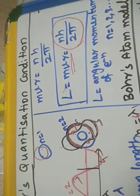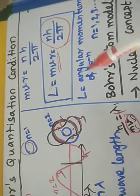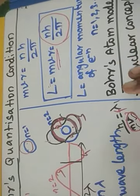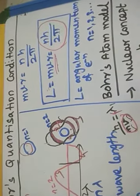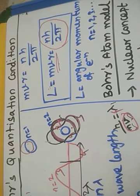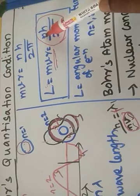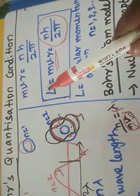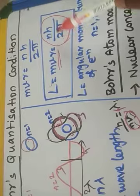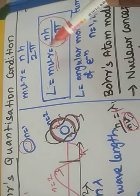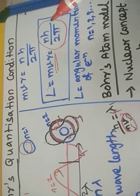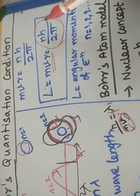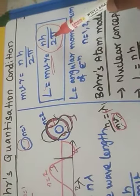This is the Bohr quantization condition — Bohr's postulate. Only those electrons whose angular momentum equals nh/2π are present in a particular orbit. If n=4, the angular momentum must equal 4h/2π; if n=5, it equals 5h/2π for all electrons in the fifth orbit.